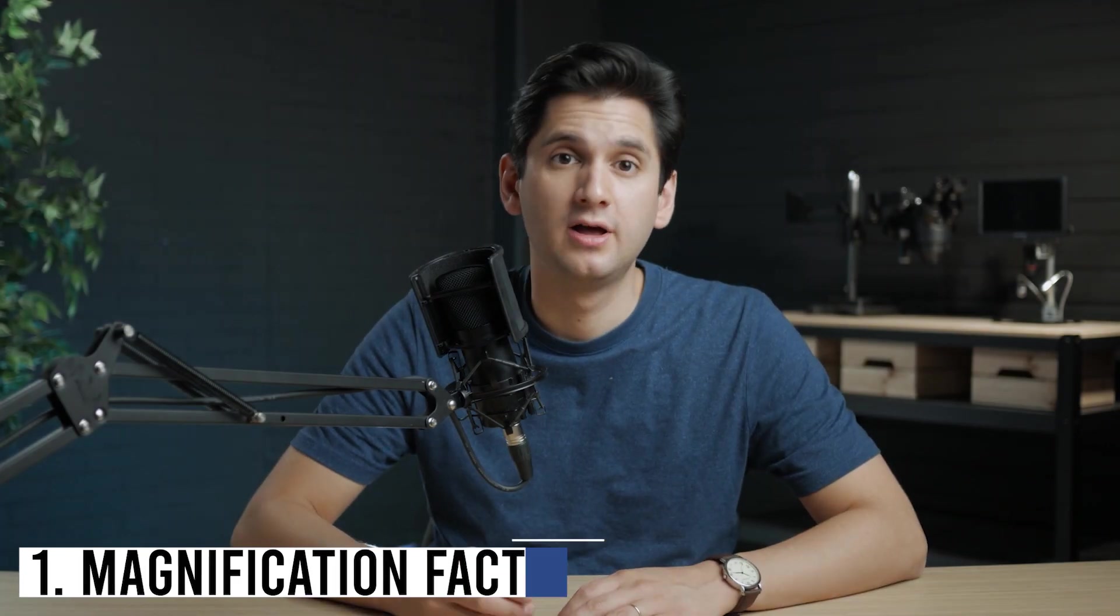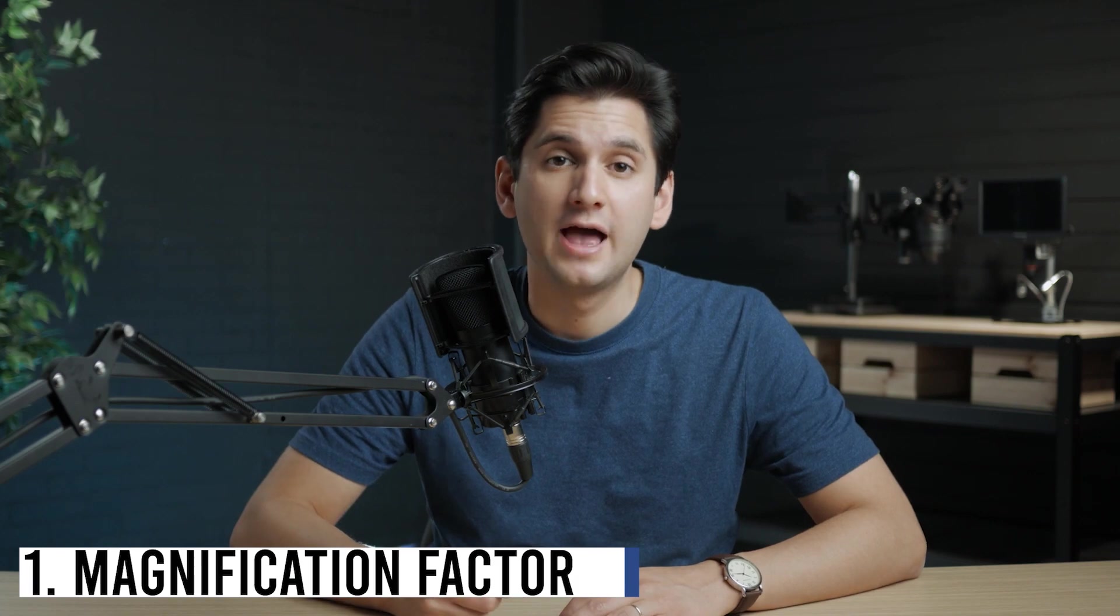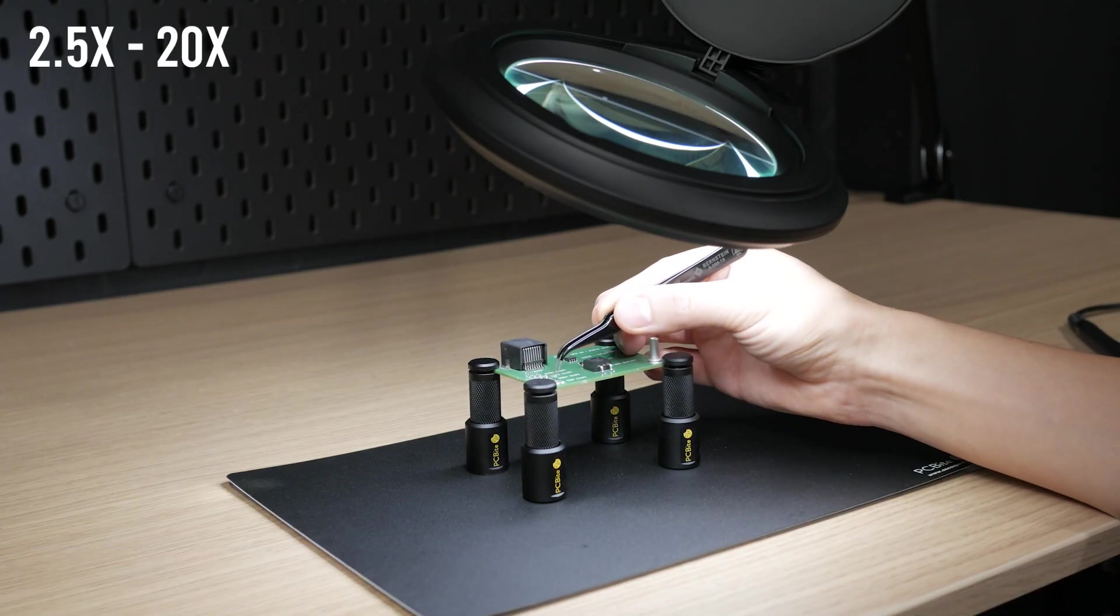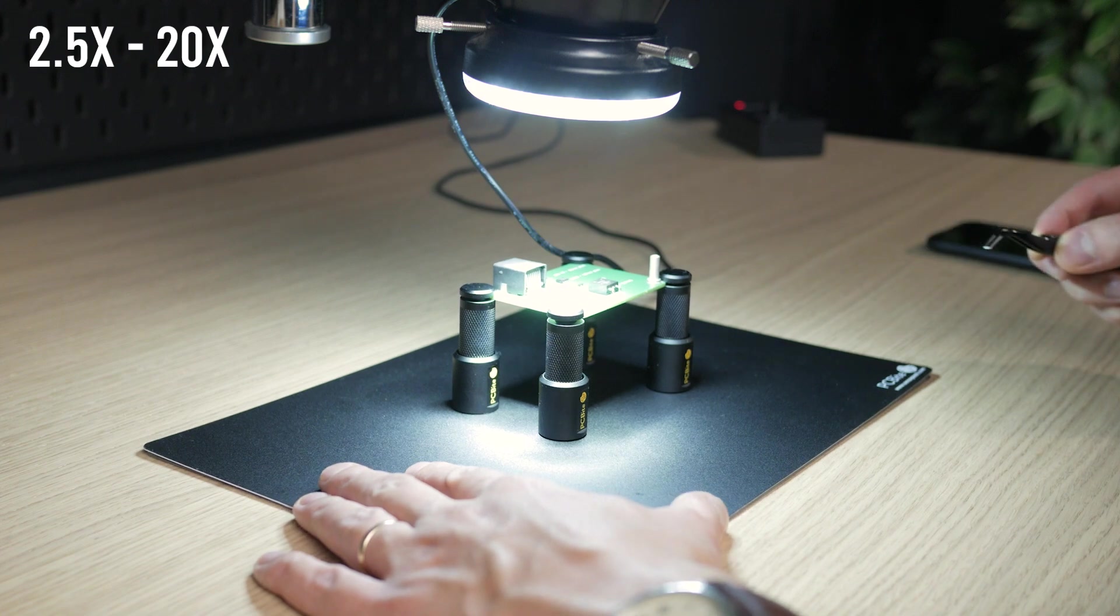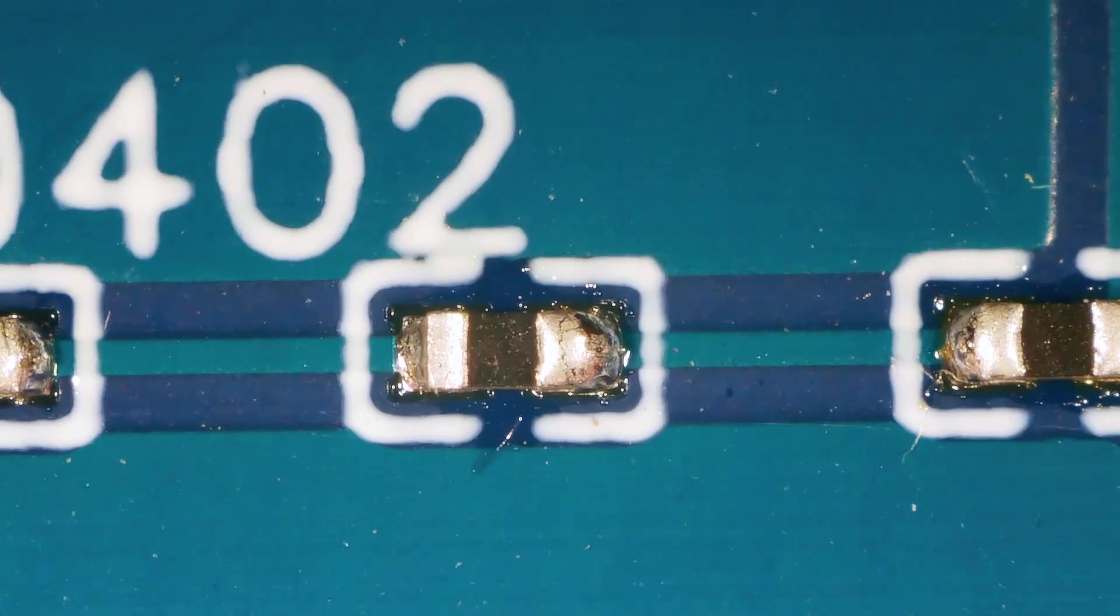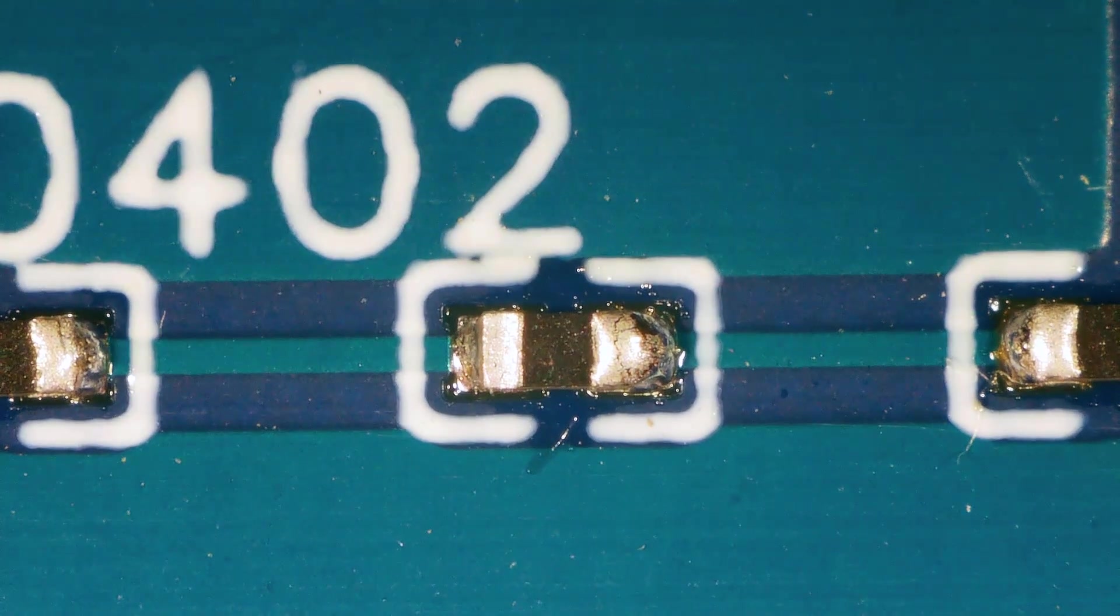For practical work like component placement and soldering, a minimum magnification of 2.5 and a maximum magnification of 20 is enough. If you go above this magnification, practical work becomes almost impossible to do. Magnifications above 20 are for inspection of extremely small things such as an opened IC.